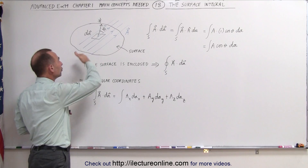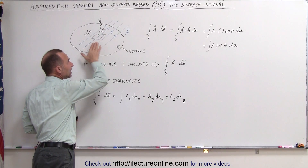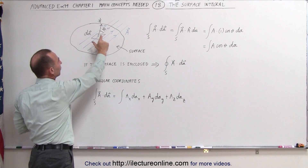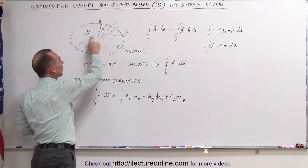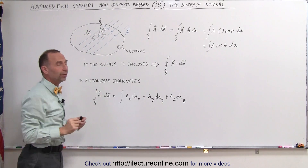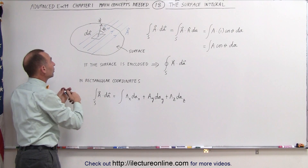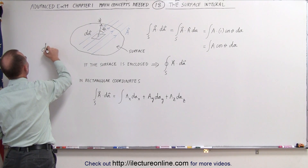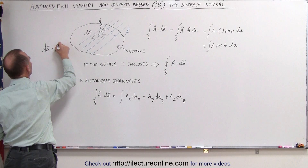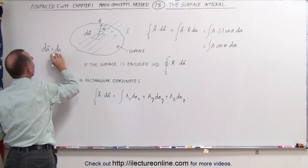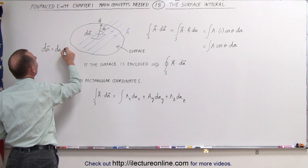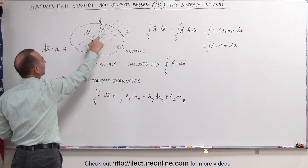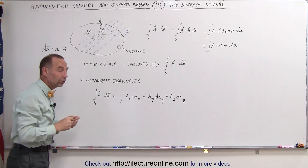Let's say we have a uniform vector field called A in this particular direction. We have a surface, and we take a very small area element. We call that dA with a vector symbol, which means the vector dA is equal to the area element dA multiplied times the unit vector n, which is perpendicular to the surface at that particular location.